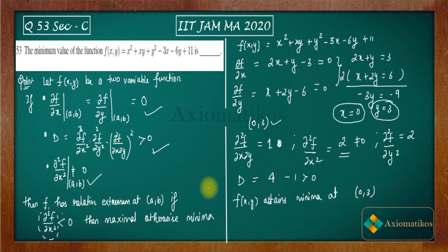Let us calculate it. f(0,3) will be 0 + 0 + 9 - 0 - 18 + 11. So 11 plus 9 will be 20, 20 minus 18 will be 2. So 2 will be your answer for this question.